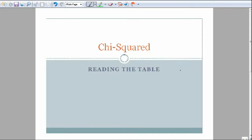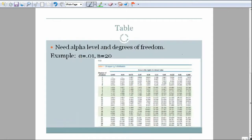Since chi-squared is different than a regular normal hypothesis test, there's going to be a different table that we have to learn to read. Let's go ahead and look at an example.